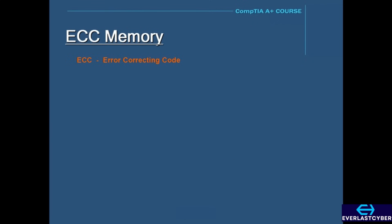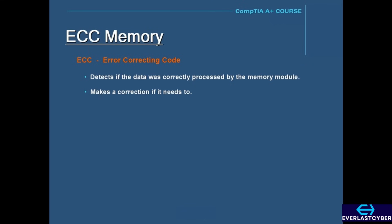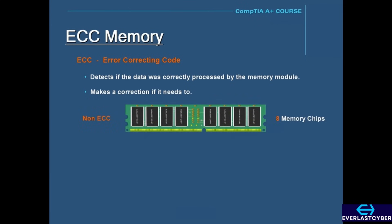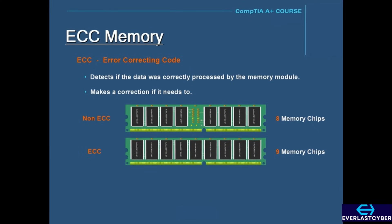Some RAM modules have ECC, which stands for Error Correcting Code. It detects if the data was correctly processed by the memory module and makes a correction if needed. You can tell if a RAM module has ECC by counting the number of memory chips on the module. In a standard non-ECC DIMM, it will have eight memory chips, but in an ECC module, it will have nine. Most RAM modules today are non-ECC, because advances in technology have minimized memory errors and made non-ECC RAM more stable. Typically, ECC memory is mostly used in servers, because servers need to be up and running at all times, and ECC is an extra precaution against memory errors.